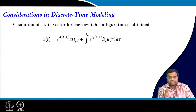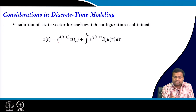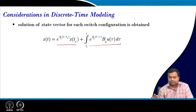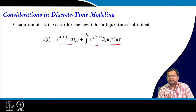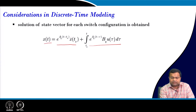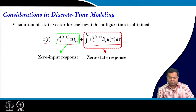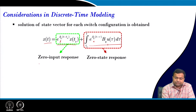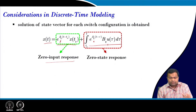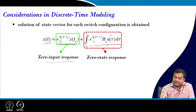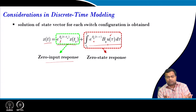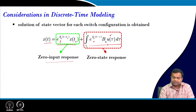Now, how to get the solution of the state vector? Any state vector solution in general form can be written in a standard form from control system state space analysis. This state solution depends on A_Q — if A_Q and B_Q change, the solution will be different. The first term is called the zero input response: the response due to initial conditions when no input is applied. The second term, when the initial condition is taken to be zero, gives the zero state response due to the applied input.